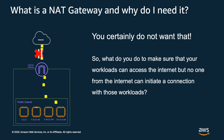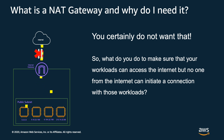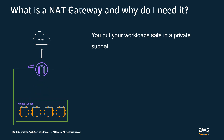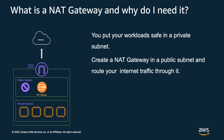We don't want that. So what can we do to make sure that our workloads can access the internet, but no one from the internet can initiate back to those workloads? You put your workloads in a safe and private subnet. You create a NAT gateway — a network address translation gateway — in a public subnet and route your internet traffic through it.